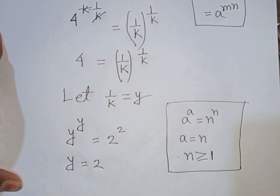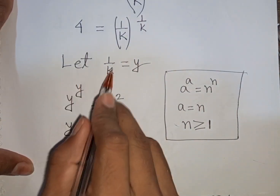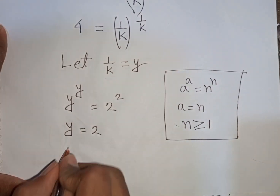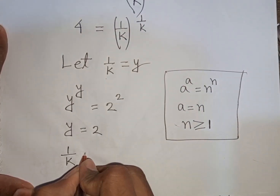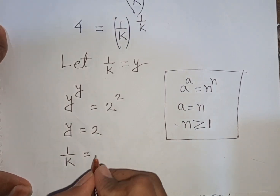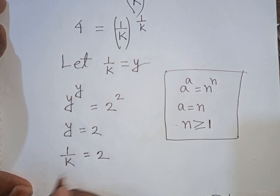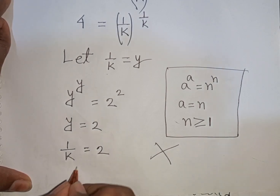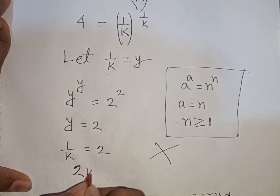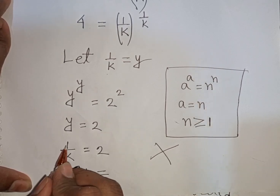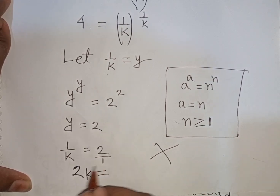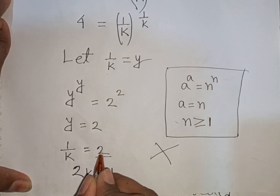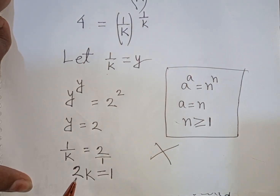But remember that we let 1 by k be substituted by y, so y equals 1 by k is equal to 2. Now here I can apply cross multiplication, so I can write k multiplied by 2, that means 2k, is equal to 1 multiplied by 1, that means 1. Here 2 is the same as 2 by 1, so k times 2 gives 2k is equal to 1.